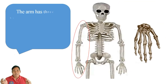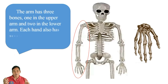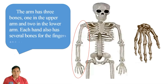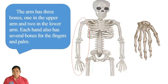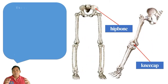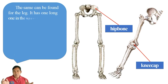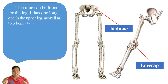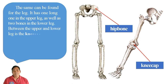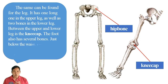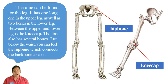The arm has three bones — one in the upper arm and two in the lower arm. Each hand also has several bones in the fingers and palm. Similarly, the leg has one long bone in the upper leg and two bones in the lower leg. Between the upper and lower leg is the kneecap. The foot also has several bones. Just below the waist, you can feel the hip bone, which connects the backbone and the legs.